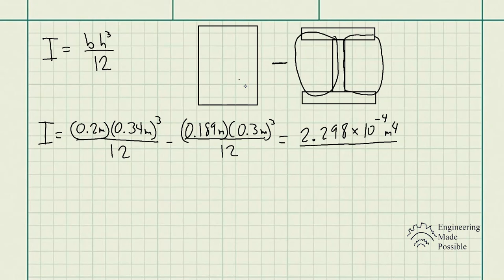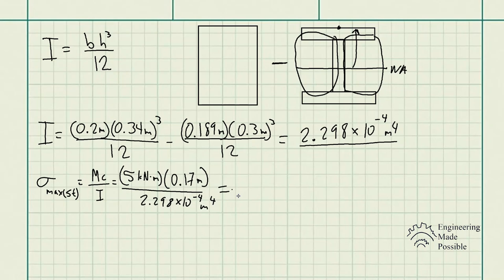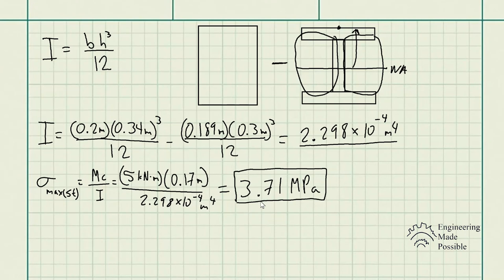Now let's solve for the maximum bending stress in the steel. The maximum stress in the steel occurs at the very top of the beam. Using σ = M·y/I, we have the moment of 5 kNm times 0.17 m — the distance from the neutral axis to the top, which is half of 0.34 m — divided by the area moment of inertia. This gives a maximum steel stress of 3.71 MPa.